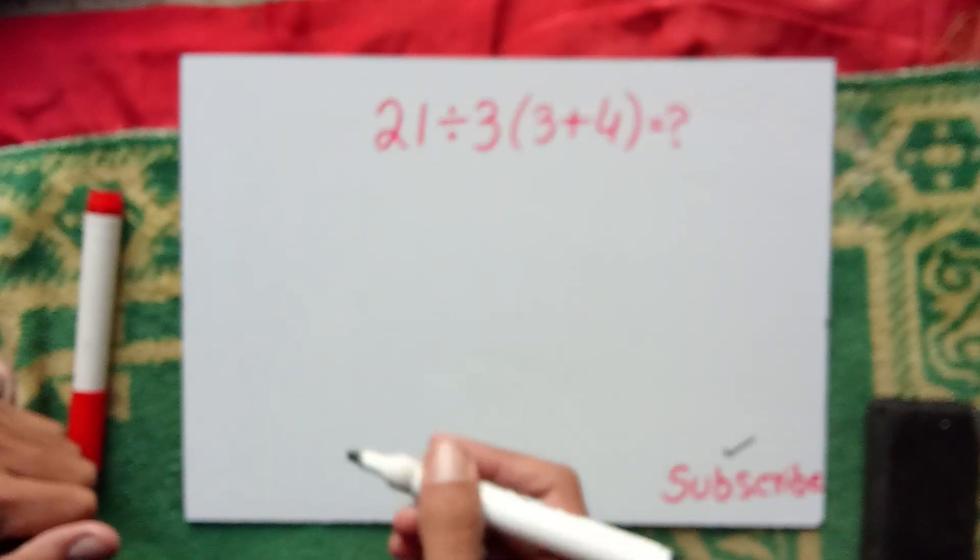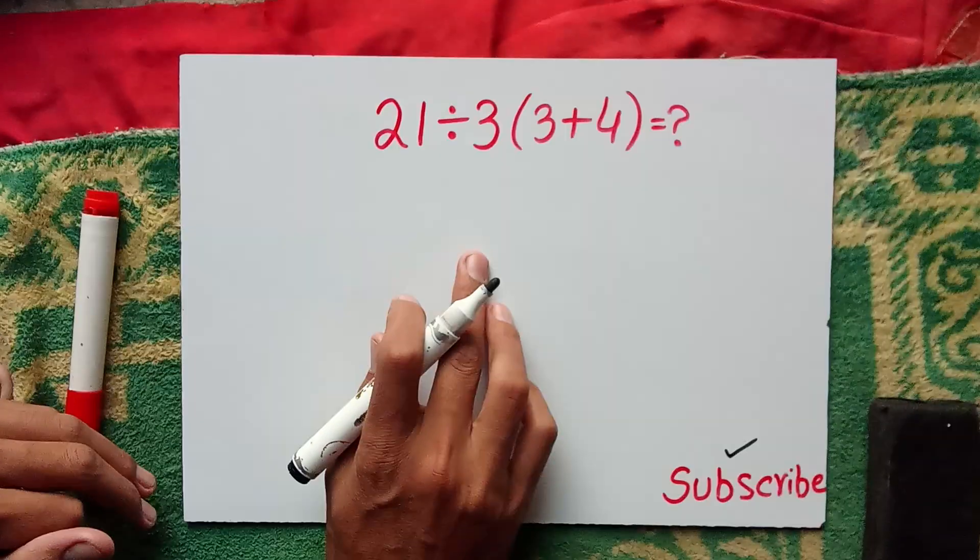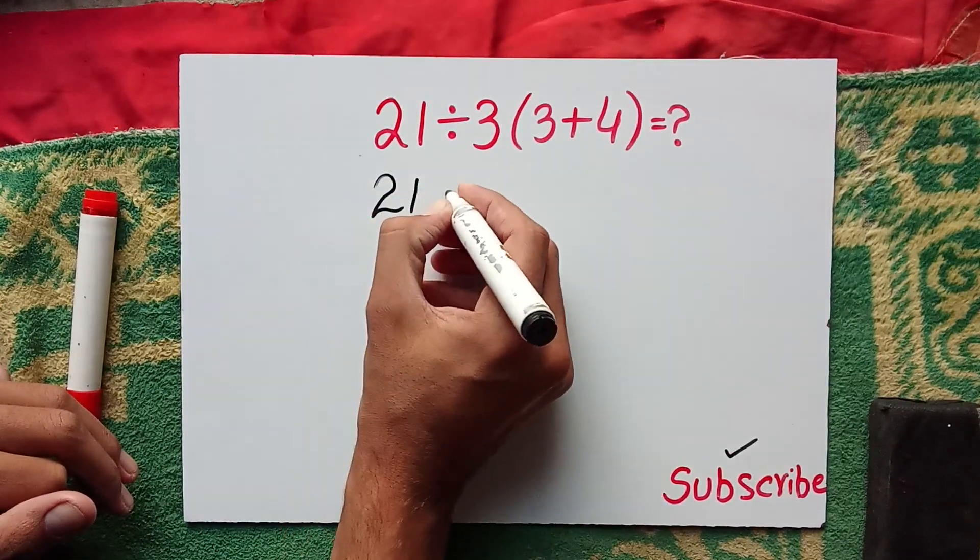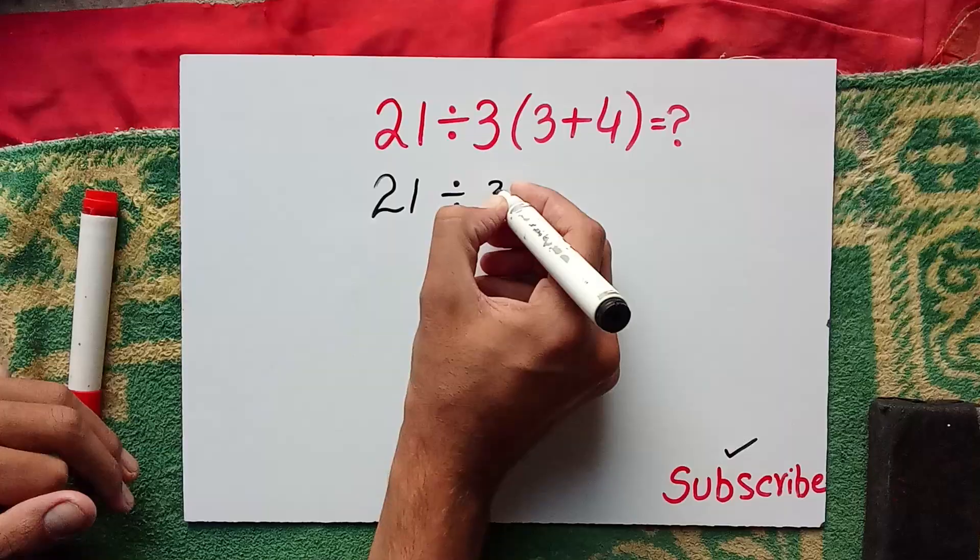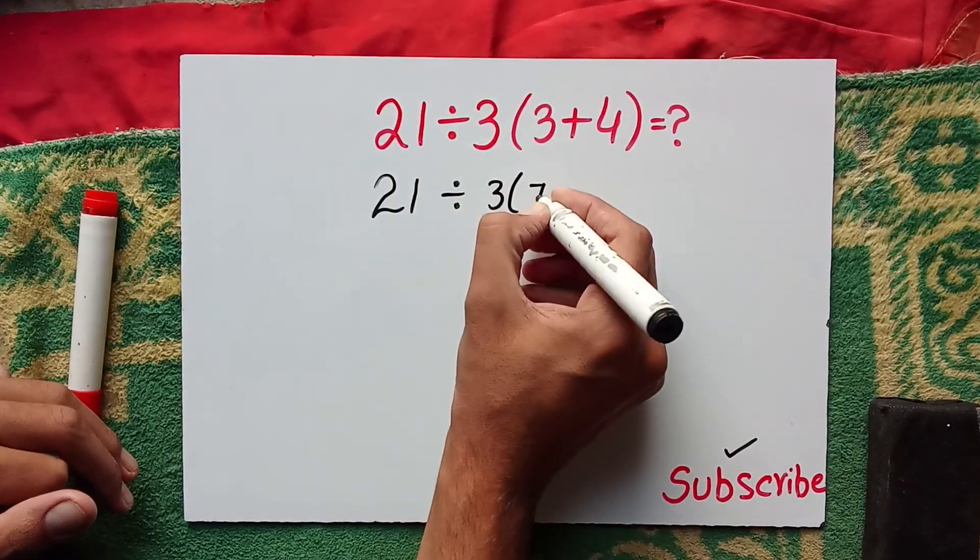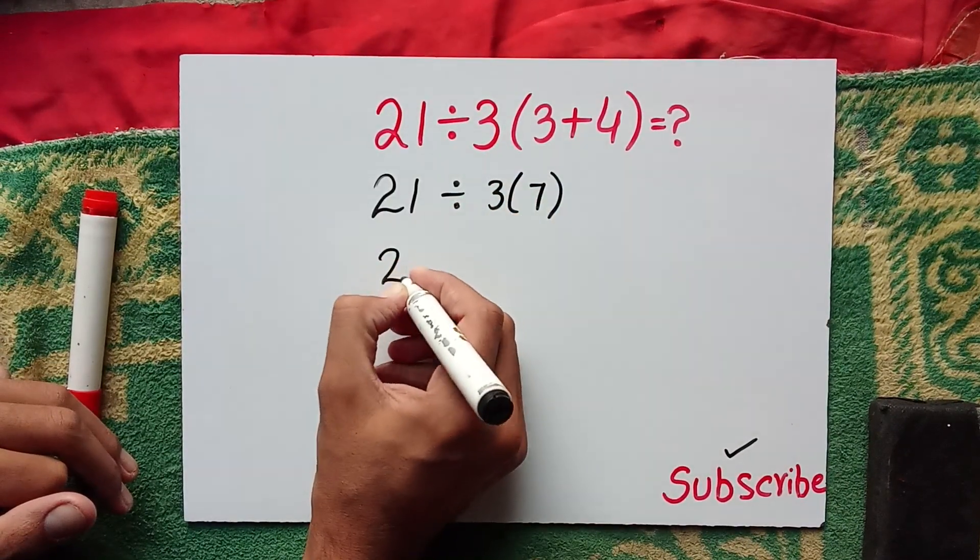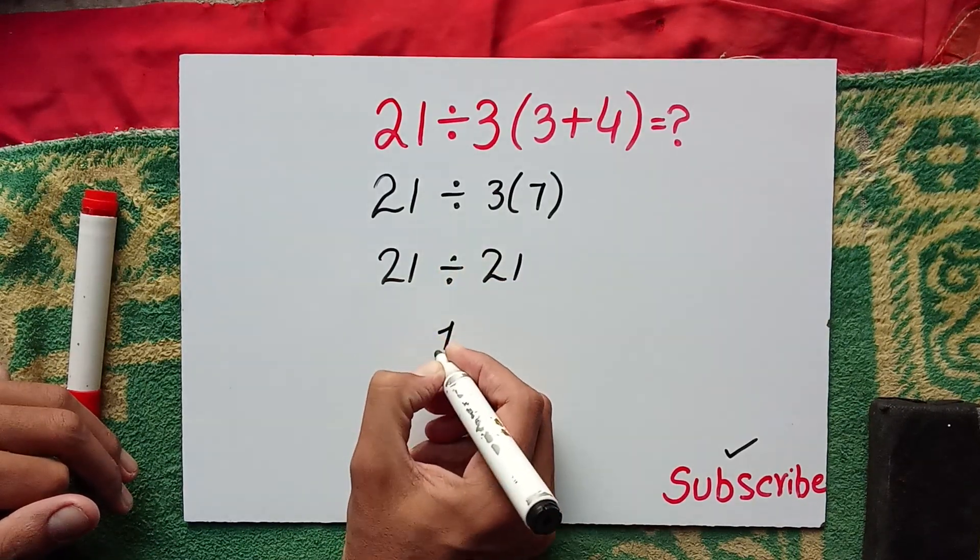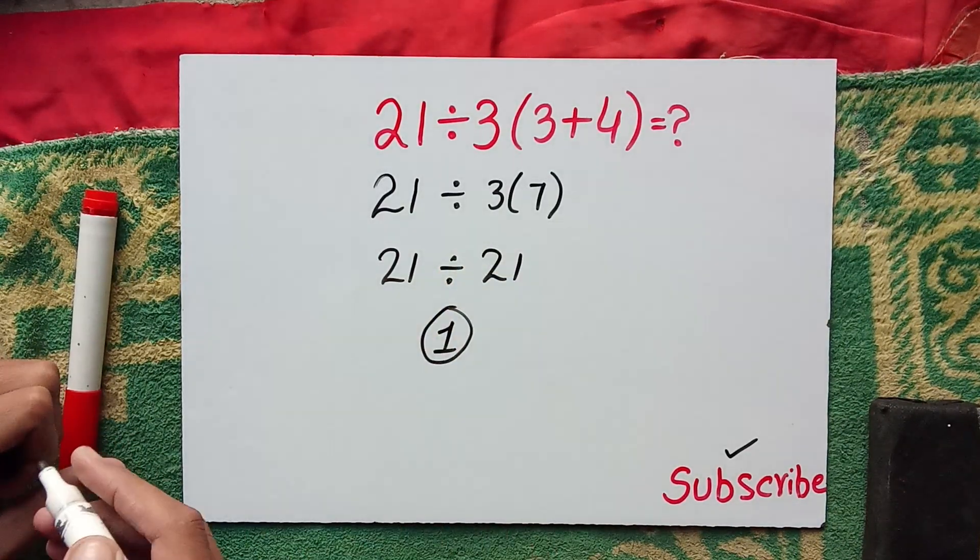Most people solve this question using the wrong method. They calculate 21 divided by 3, and 3 plus 4 equals 7, then 21 divided by 21, which equals 1. But this answer is wrong.